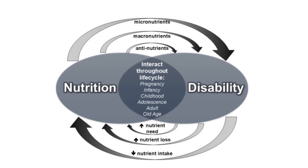This figure shows us that nutrition and disability interact together through all the phases of the life cycle: in the pregnant stage, the infant stage, childhood, adolescence, as an adult, and in old age. All elements of nutrition concerning the micronutrients, the macronutrients, and the antinutrients — deficiency of each of them can lead to disability. Disability also causes an increase in nutrient needs and an increase in nutrient loss, as well as a decrease in nutrient intake, all of which lead to malnutrition.